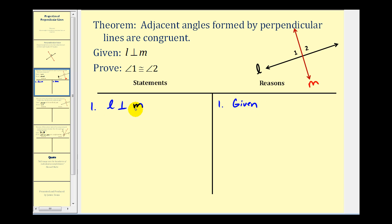And by definition, if these two lines are perpendicular, angle one and angle two are right angles. This is by definition of perpendicular lines.